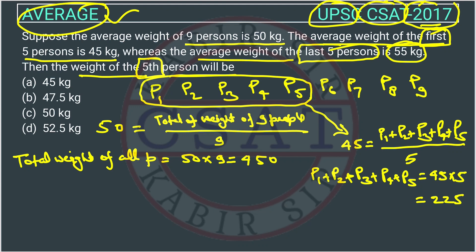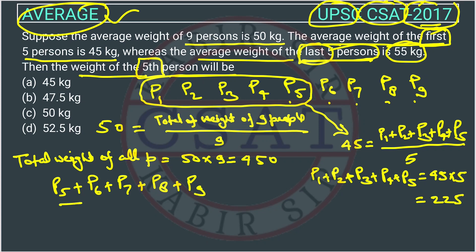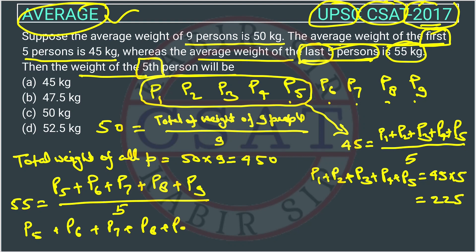I will tell you the short way to do it as well. Now the last five persons are p9, p8, p7, p6, and p5. So the last five persons means p5 + p6 + p7 + p8 + p9, and their average weight is given as 55 kg. From here, p5 + p6 + p7 + p8 + p9 equals 55 into 5, which is equal to 275.